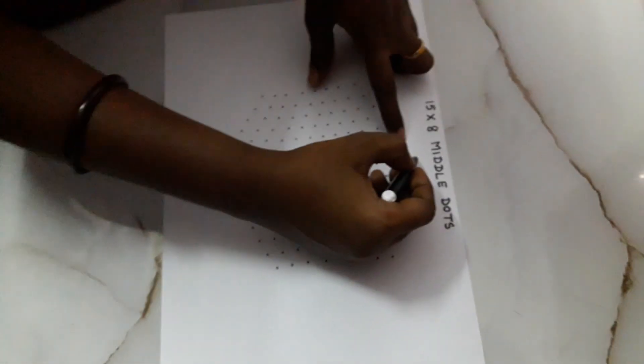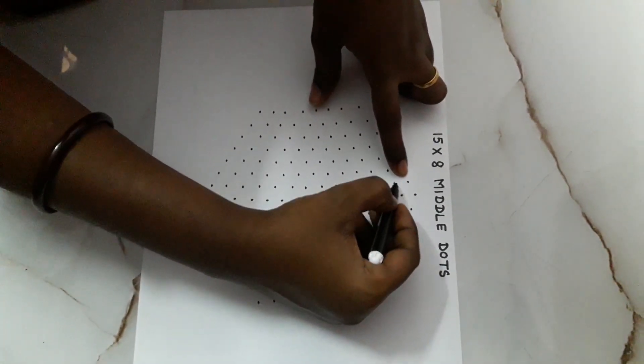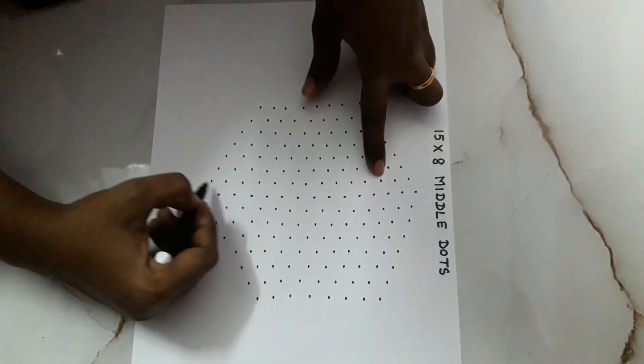How to draw the second line? From first dot to second dot, in between, you have to draw the dots. That only is the middle dots.